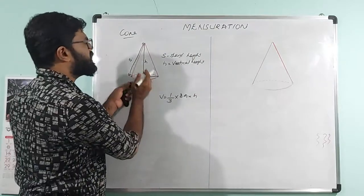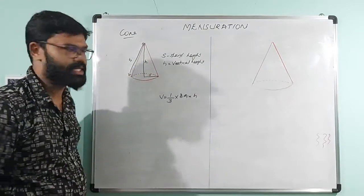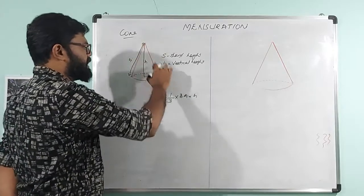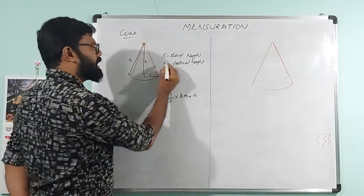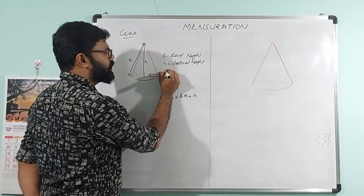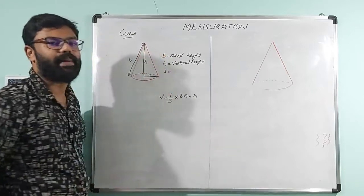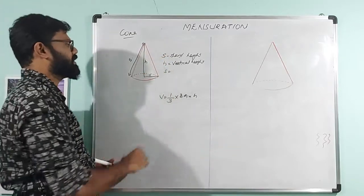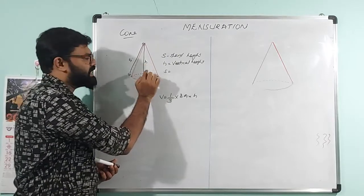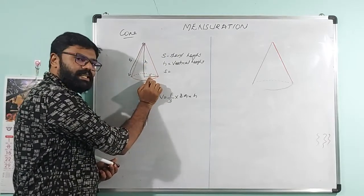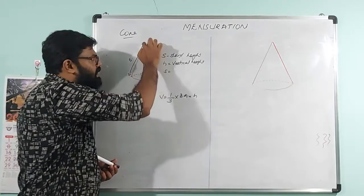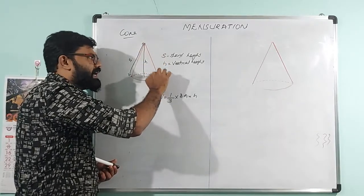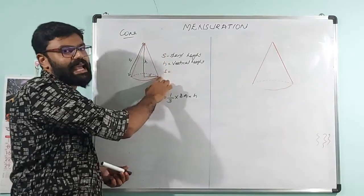We are using the radius and vertical height. Where is the slant height? The slant height is used in this relation. This is the height, this is the radius, and this line is the slant height.